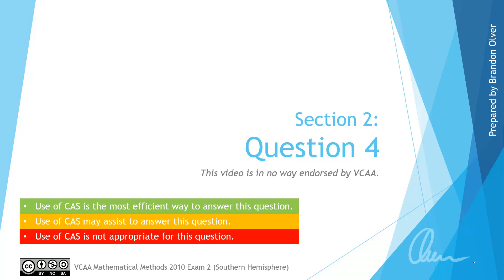Welcome to section 2, question 4 of the 2010 Mathematical Methods Exam 2. In this video, we will be looking at the solutions and examination advice for this question. As we progress through this question, you will notice that there are colour-coded boxes to indicate how likely the CAS calculator is to be used in efficiently answering the question.